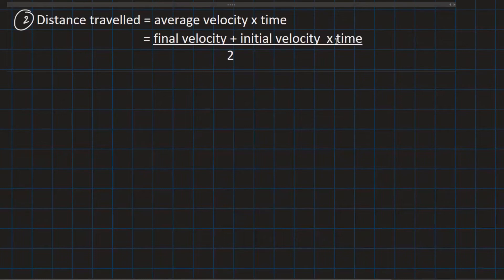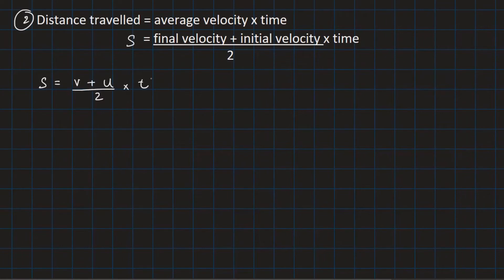And this is into time. Now, how do I write this? The distance traveled is denoted by letter s. So I will write s as v plus u upon two into t.